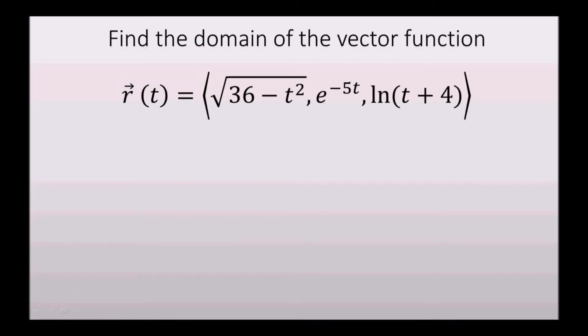Find the domain of the vector function r of t is equal to the square root of 36 minus t squared, e to the negative 5t, and the natural log of the quantity t plus 4.